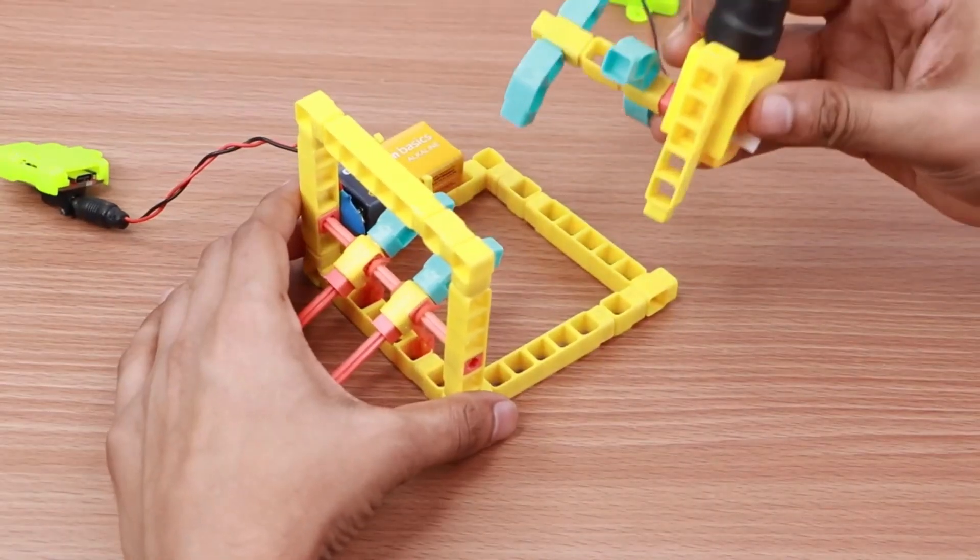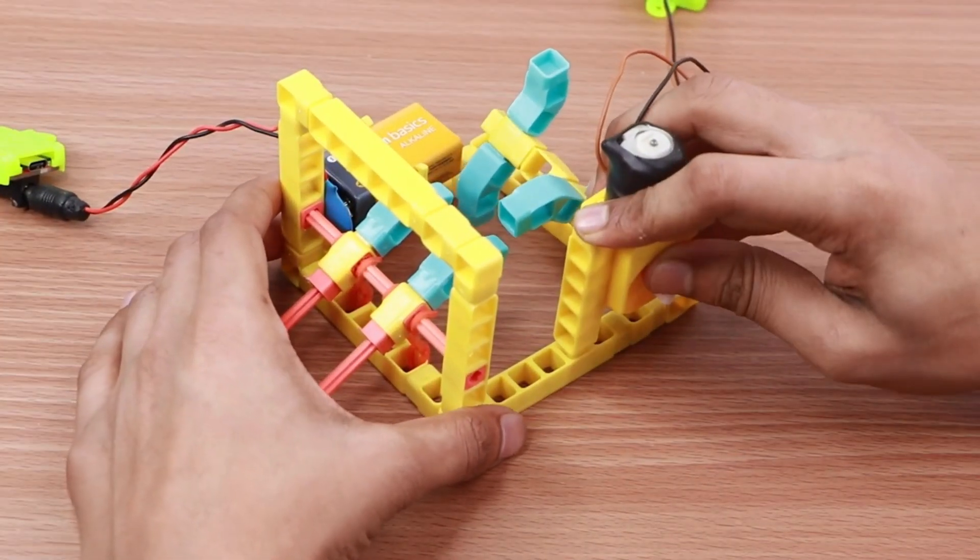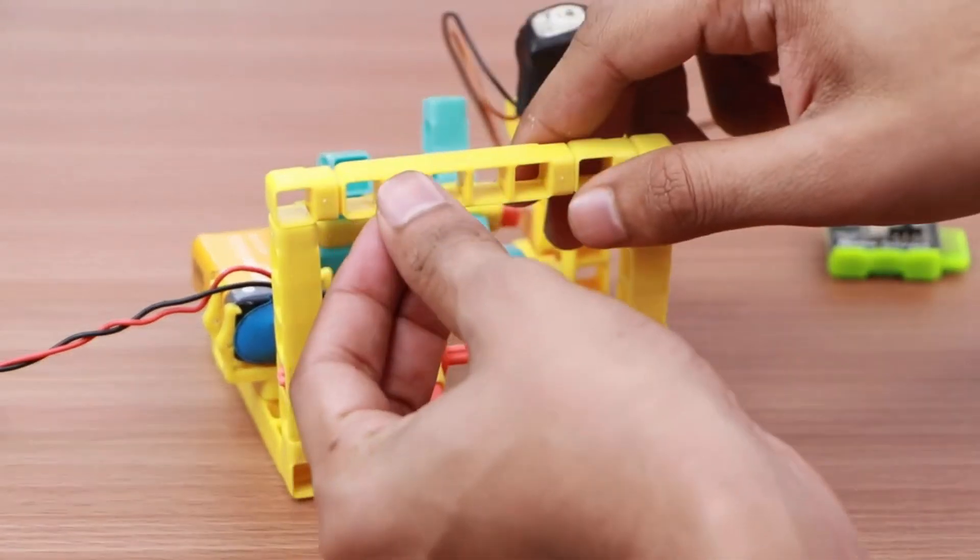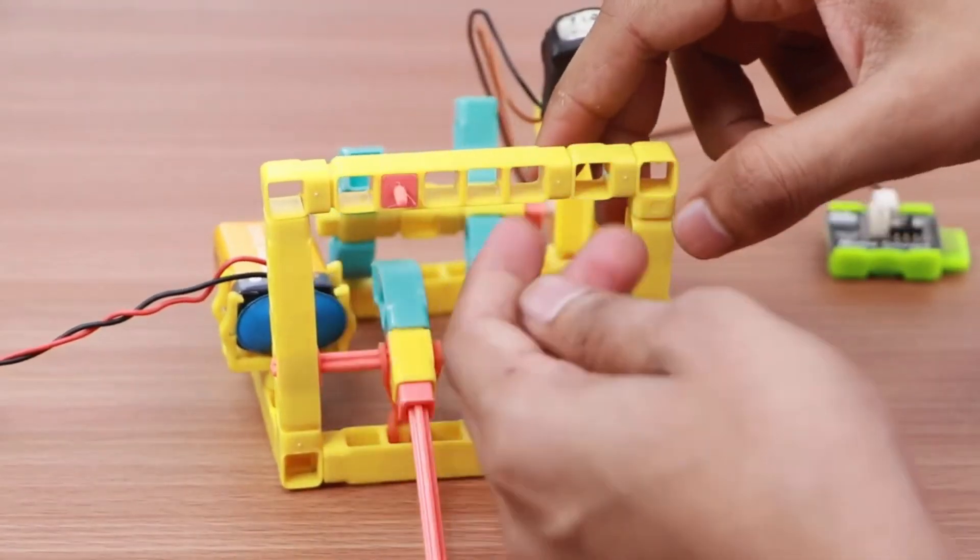Now attach the motor assembly with the beat generator to the base. Connect two blocks holders to the structure. Our structure is now ready.